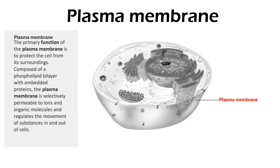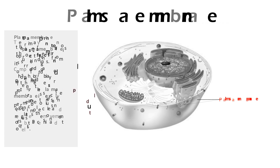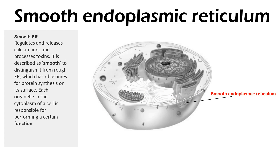The primary function of the plasma membrane is to protect the cell from its surroundings. Composed of a phospholipid bilayer with embedded proteins, the plasma membrane is selectively permeable to ions and organic molecules and regulates the movement of substances in and out of the cell.